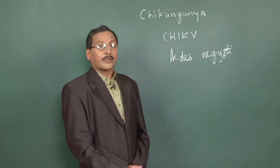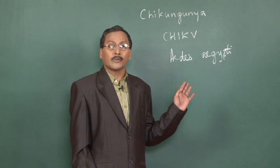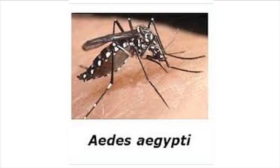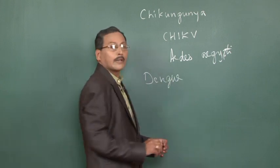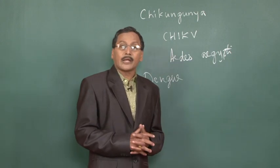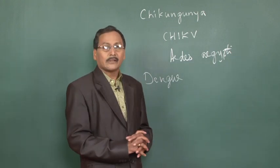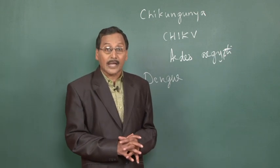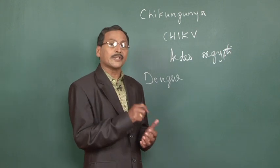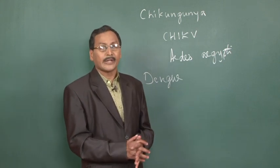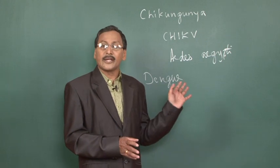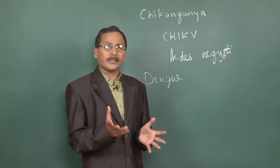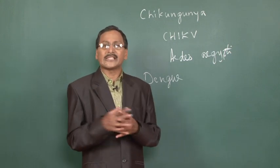There is another disease also spread through the bites of the Aedes aegypti mosquito — it is called Dengue. This is also a viral disease and there are 4 types of Dengue virus, all 4 of which are present in India. It spreads through the bites of infected Aedes aegypti mosquitoes, and the incubation period may be 4 to 6 days.